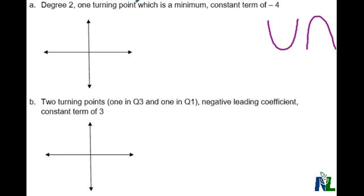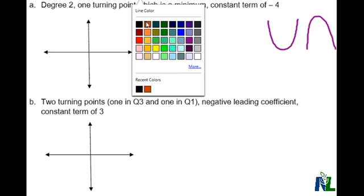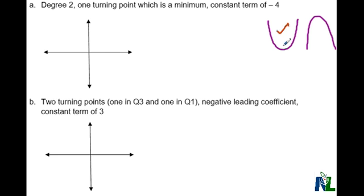The second part of this says the turning point, which is a minimum. So what that would mean is that we're going to focus on one that opens up, because that's the type of parabola that has a minimum value.